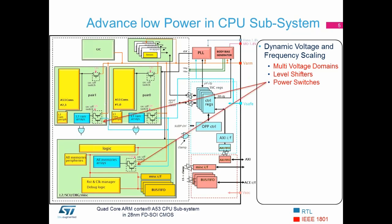Then we have power switches, which are more interesting. We need a range from 0.6 to 1.1 volts, but memories are not functional at such low voltages. If we have memories of reasonable area, they would start to limit the Vmin of the CPU. Therefore, we need a mechanism to shift the memory array voltage to VSAFE — a higher voltage — when operating at very low voltages. When at very low voltage, the memories are powered by VSAFE at 0.9 volts, shown in cyan. At high voltages, the array voltage switches back to VARM to extract maximum throughput.